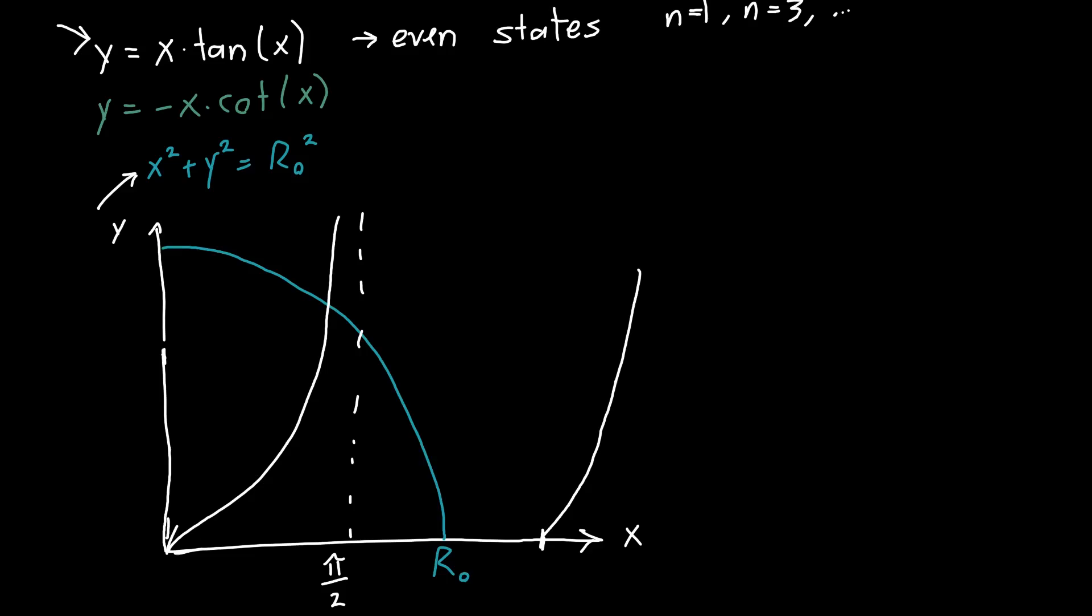Now our minus x cotangent x function is actually going to start at pi over two and it's going to look very similar, just graphically to this x tangent of x function and I would recommend you do actually plot it on your computer just to verify with yourself that that is the case.